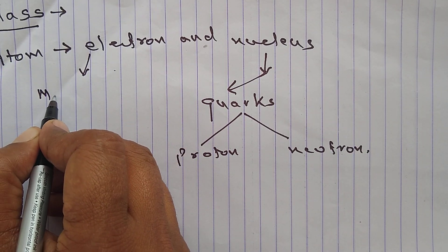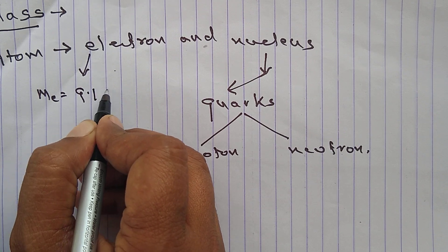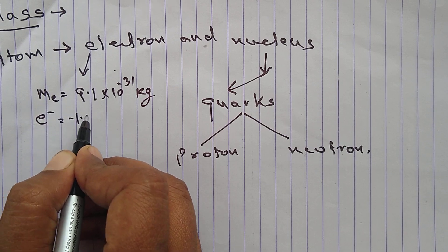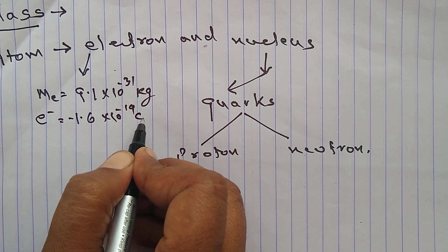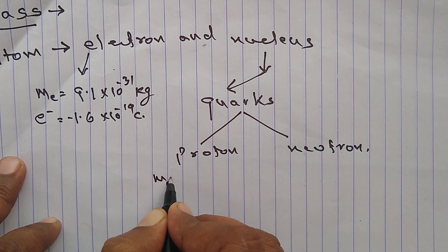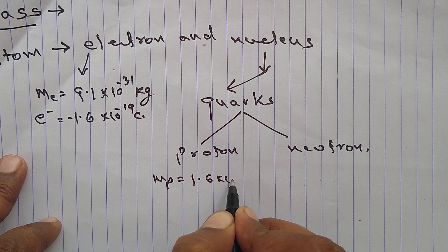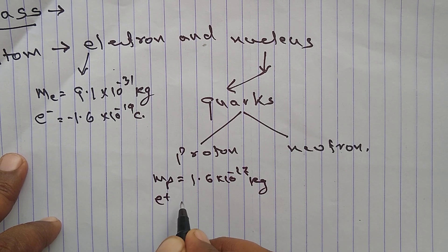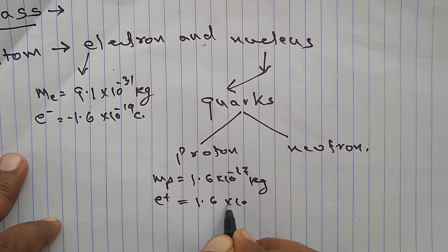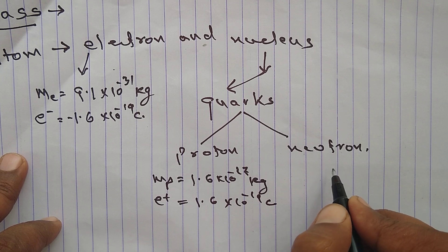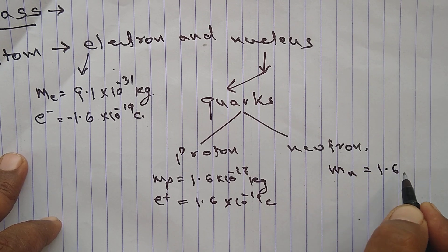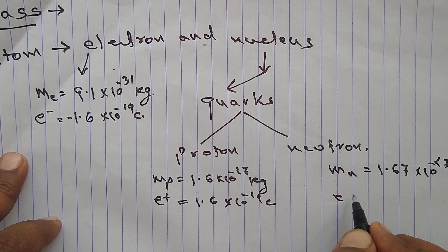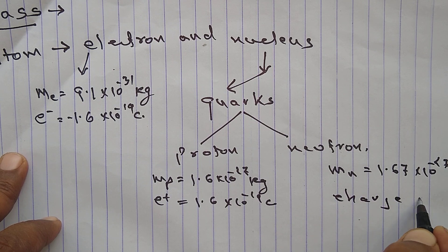Mass of electron: 9.1 × 10⁻³¹ kg. Charge of electron: −1.6 × 10⁻¹⁹ coulomb. Neutron mass: around 1.67 × 10⁻²⁷ kg, and its charge is zero.